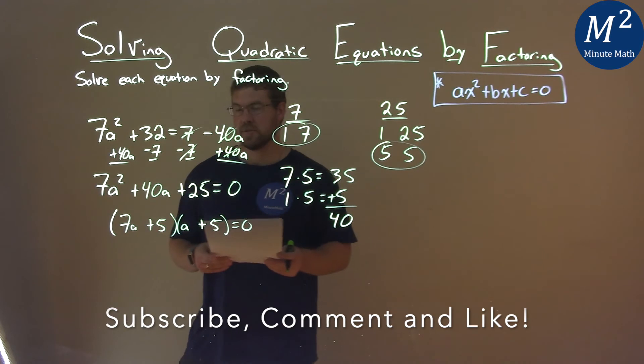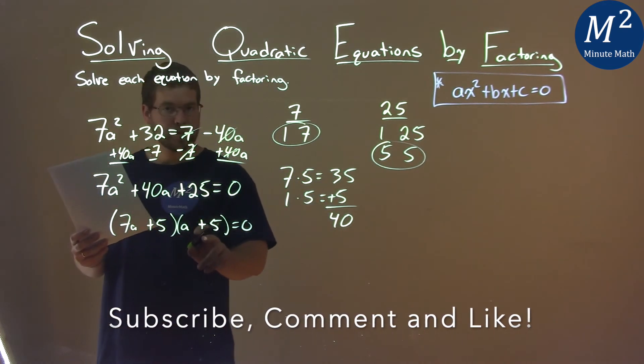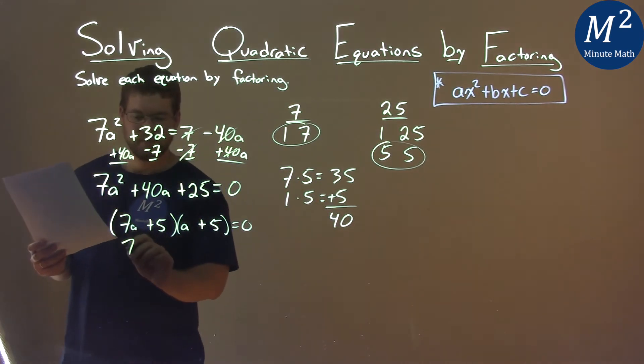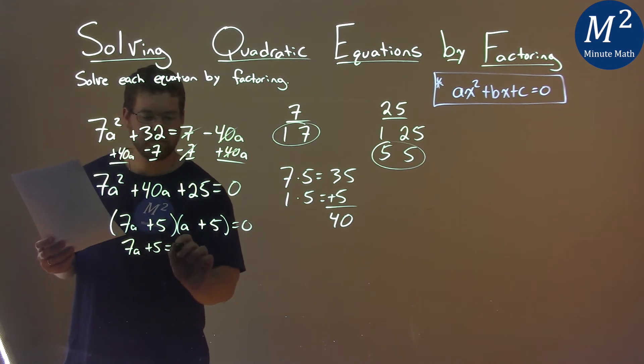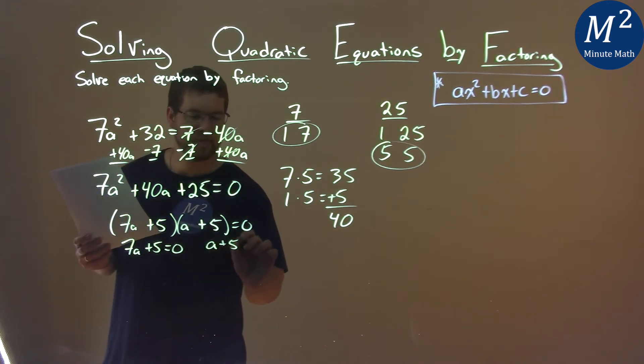Now we have it factored, and we need to solve. We do that by taking each part individually and setting them equal to 0. So 7a plus 5 equals 0, and a plus 5 equals 0.